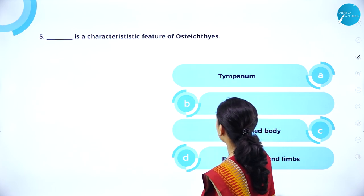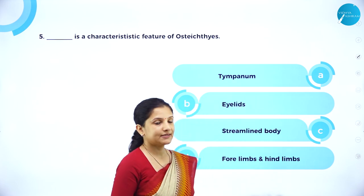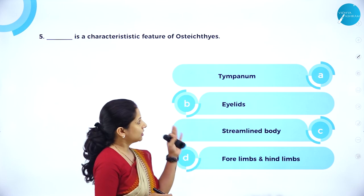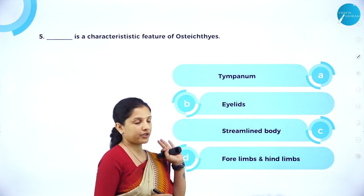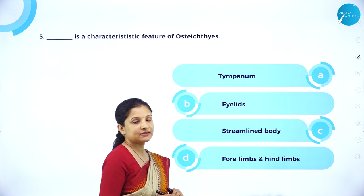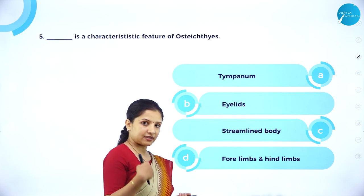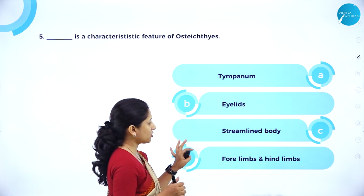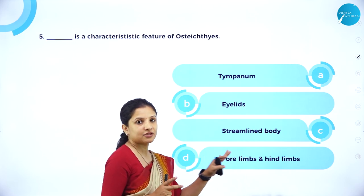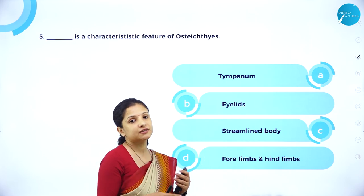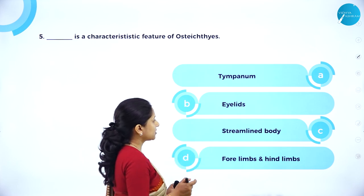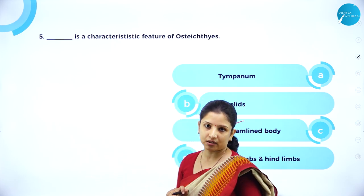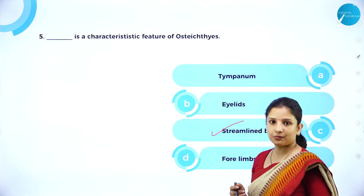MCQ: Which is a characteristic feature of Osteichthyes — tympanum, eyelids, streamlined body, or forelimbs and hind limbs? Tympanum are found in amphibians and reptiles as an external ear opening. Eyelids are found in amphibians and reptiles, not in Osteichthyes. Forelimbs and hind limbs are not found in fishes — fishes have fins for locomotion, not limbs. Therefore, the right answer is streamlined body.